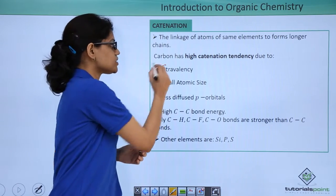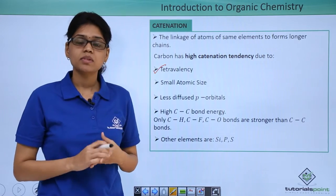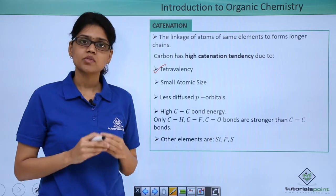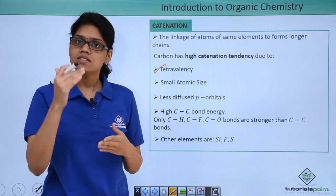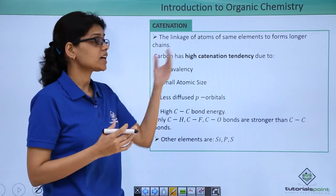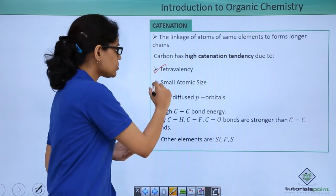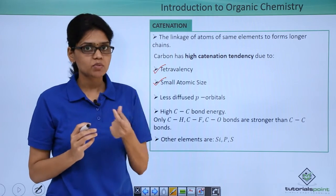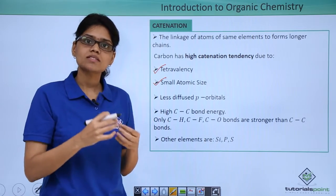The first reason is given as tetravalency. What is tetravalency? Tetravalency essentially means valence electron which is 4, and carbon has 4 valence electrons and it can form 4 bonds. But we also know that there are other elements in the same group whose valency is also 4, but they don't have such high catenation as carbon. The next reason is given as small atomic size. Carbon has very small atomic size, but as we go down the group, the atomic size increases.